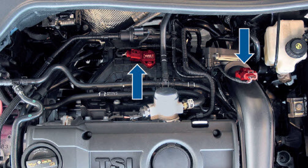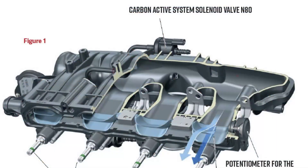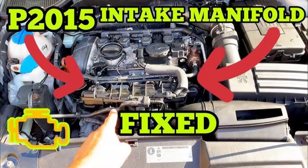The P2016 code can cause various symptoms, including check engine light illumination — the most common symptom, indicating a problem with the engine control system. The engine may also idle rough due to the incorrect air-fuel mixture caused by the faulty sensor. Additionally, the engine may experience reduced power due to the inability to control the air intake properly, and it may consume more fuel due to inefficient combustion caused by the incorrect air-fuel mixture.